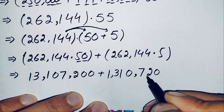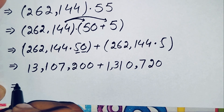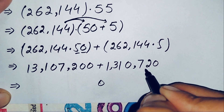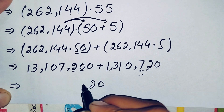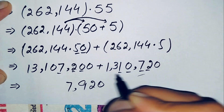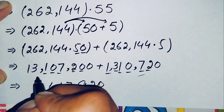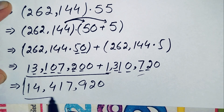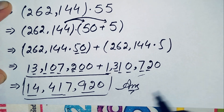Finally we add these two results: 13,107,200 plus 1,310,720. Adding from the ones position gives us 14,417,920, which is our final answer and the value of this simplification math problem.